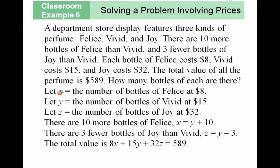So we need to introduce three variables now. I'm going to let X equal the number of bottles of Felice at eight dollars, Y would be the number of bottles of Vivid at fifteen dollars, and the third unknown is Z, the number of bottles of Joy at thirty-two dollars.